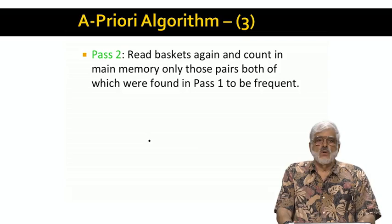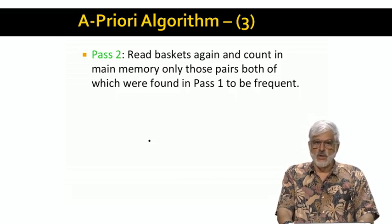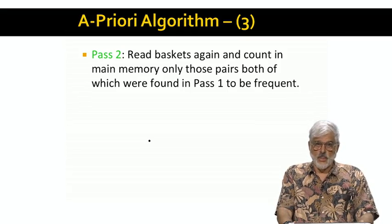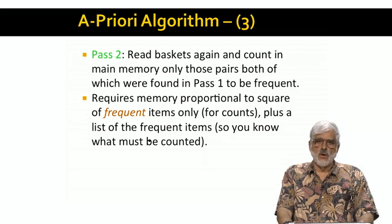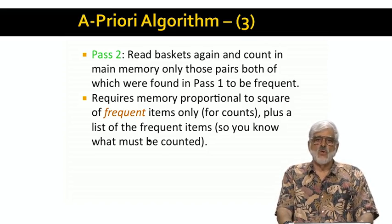Now let's look at pass 2, where we read all the baskets from disk again. As in the naive algorithm, we're going to try to count pairs in main memory. But now we use monotonicity, so we only have to count those pairs of items, both of which are among the frequent items. So, for example, if only half the items are frequent, we need to count only a quarter of all pairs. The main memory we need depends on the square of the number of frequent items only. As we read a basket from disk, we look at all its items and ignore any that are not in the table of frequent items. From what remains, we generate all pairs and increment each of their counts.